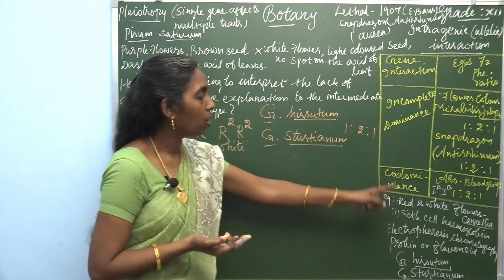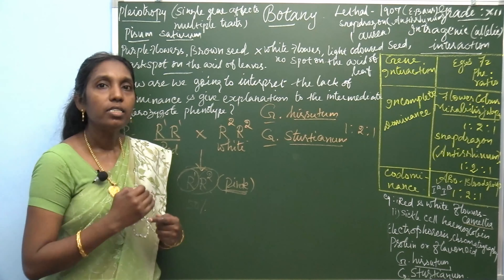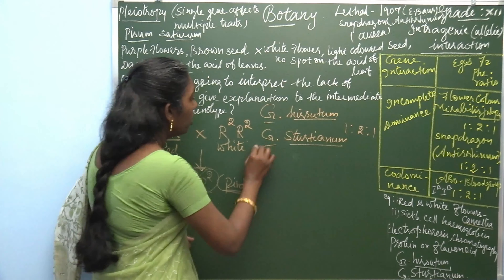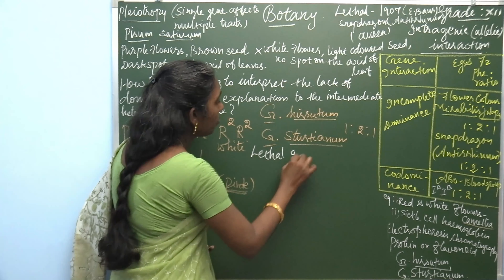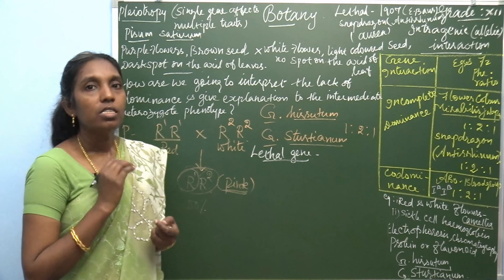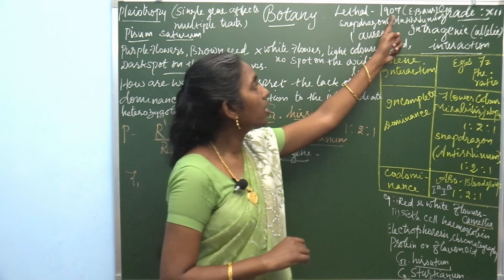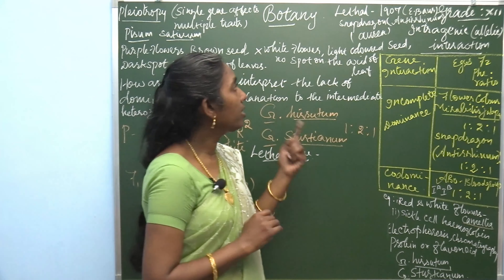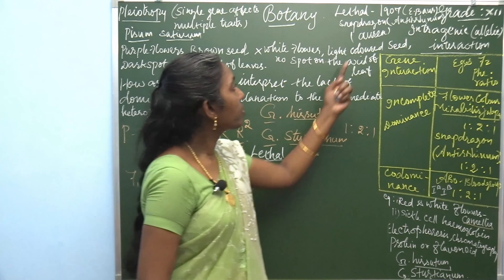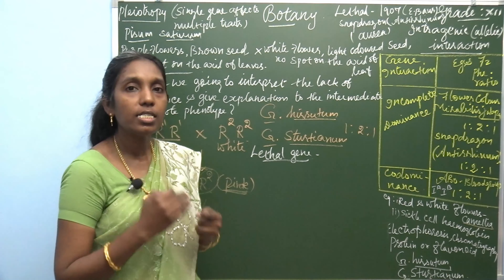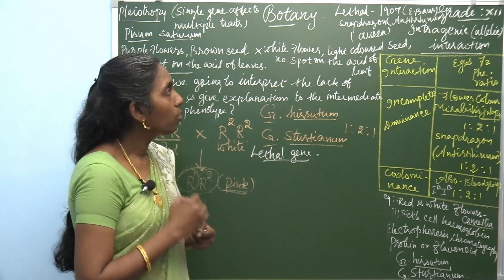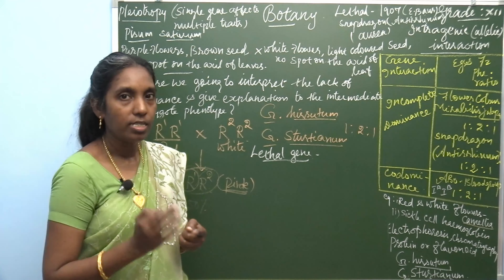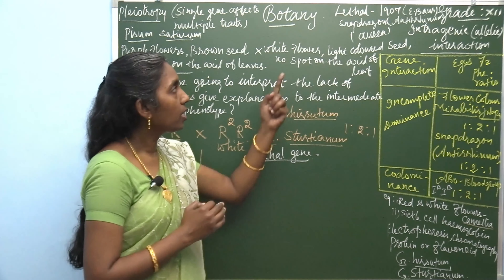Another example of intragenic interaction is the lethal gene. This was observed in 1907 by E. Barr, who explained lethal genes in snapdragon (Antirrhinum). Let's see what happens in this example.